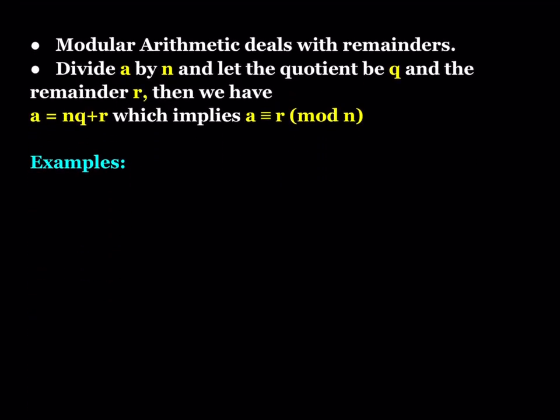Why do we use modular arithmetic? It deals with remainders. If you take a positive integer a and divide it by n, another positive integer, and let the quotient be q and the remainder r, then from the division algorithm we can write that a is congruent to r mod n. Let me explain this with an example.